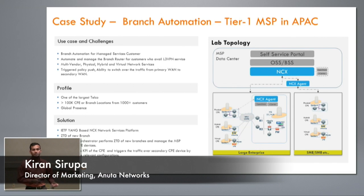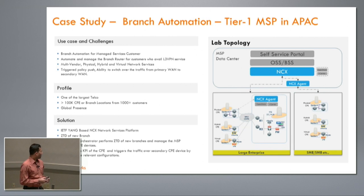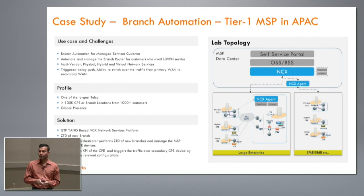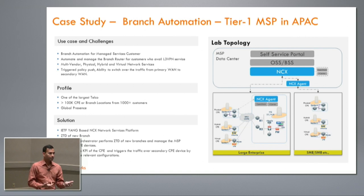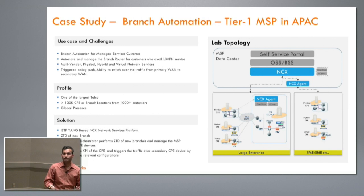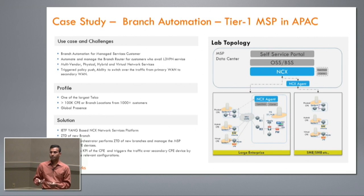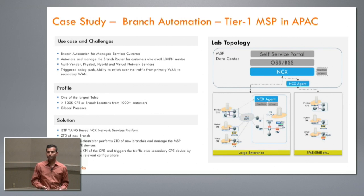We are now going into the case studies. The first case study is a Tier 1 MSP out of Singapore offering managed CPE services to enterprise customers. MSPs have to deal with a complex set of customers — some have traditional legacy CPE devices, some have hybrid CPEs with physical and virtual components, some have Cisco IWAN deployments, and some are looking at virtual CPE. A managed service provider has to cater to all these varieties and multi-vendor infrastructure.